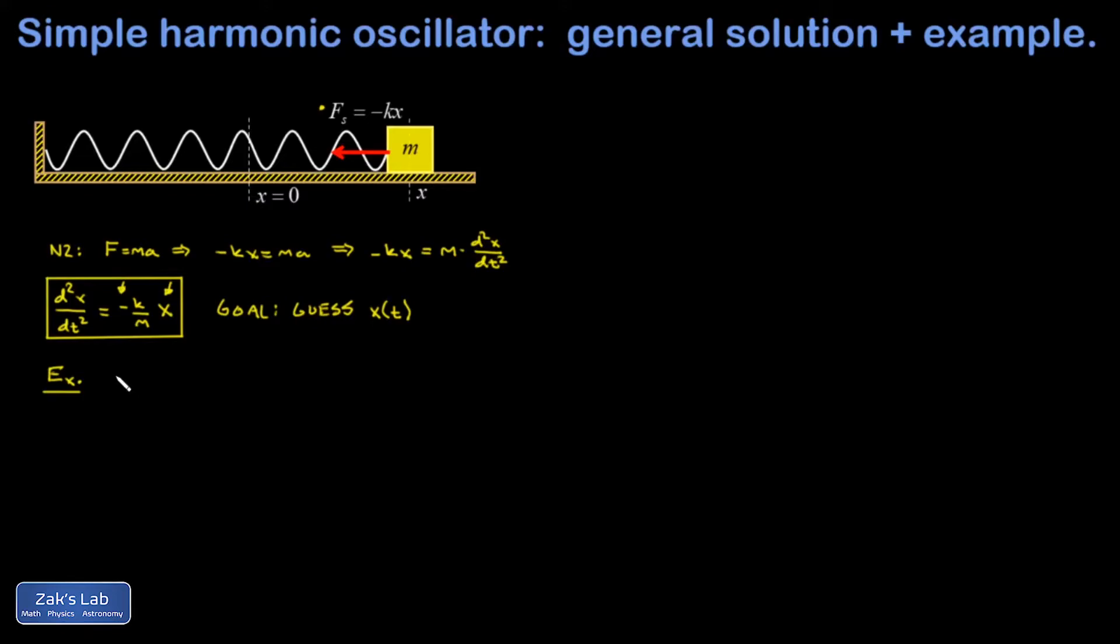After trying a few things, I realize that sines and cosines are a really good candidate here, because if I differentiate them twice, let's look at the sine function. For one derivative, it becomes the cosine. After two derivatives, it becomes the negative of the original function, and the cosine has the same property. Differentiate twice, you end up with the negative of the original function.